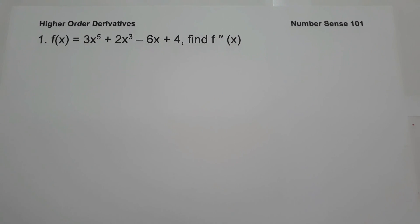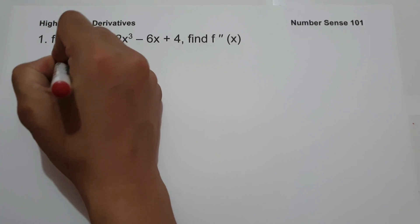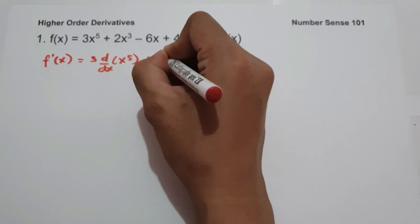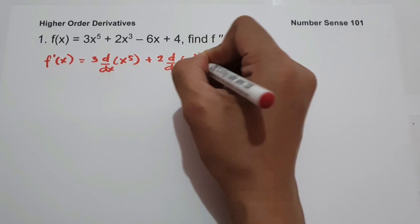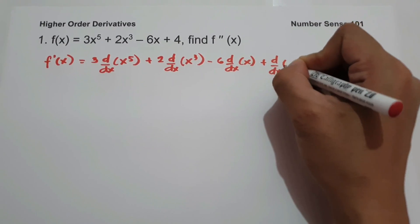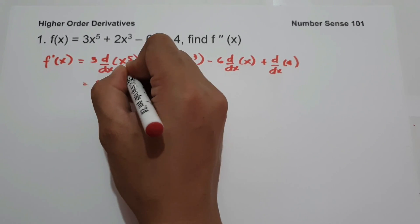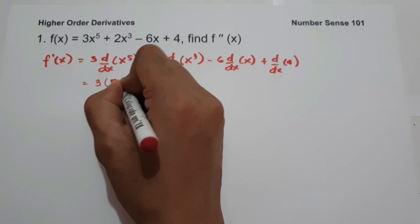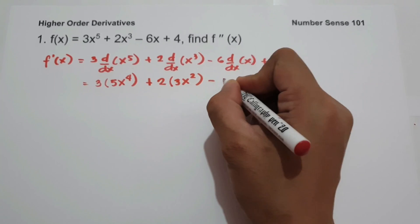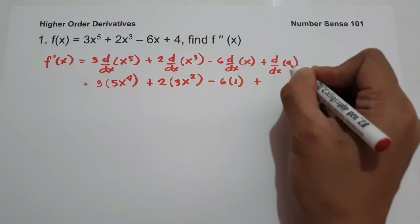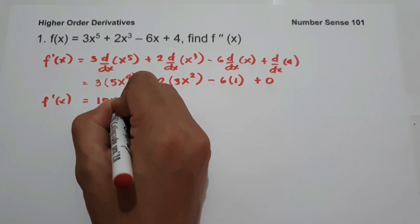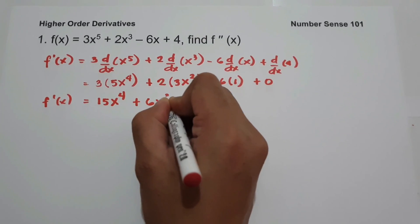So what are we going to do? Let us find first the first derivative of the given function. We have 3 times the derivative of x raised to 5, plus 2 times the derivative of x cubed, minus 6 times the derivative of x, plus the derivative of 4. To simplify: 3 times 5x to the 4th, plus 2 times 3x squared, minus 6 times 1, plus 0.